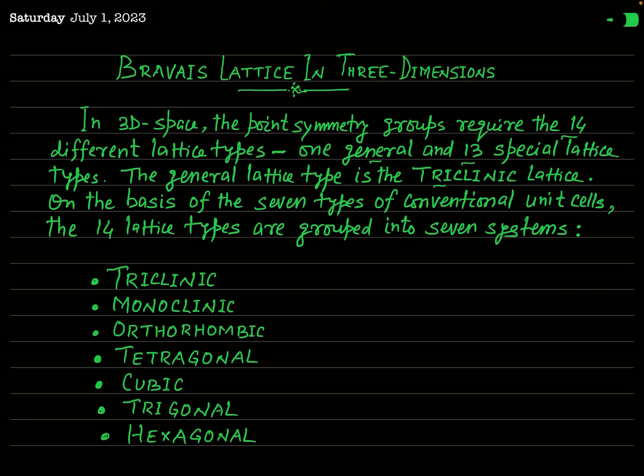On the basis of 7 types of conventional unit cells, the 14 lattice types are grouped into 7 systems. These 7 systems of lattices are: triclinic, monoclinic, orthorhombic, tetragonal, cubic, trigonal, and hexagonal lattice. These are the 7 systems of lattices which are called Bravais lattices in three dimensions, and we will now go through the important lattice characteristics of each one.